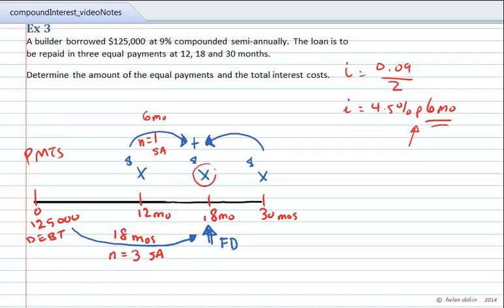The second payment of X dollars is not moved at all because it is already on the focal date, so we don't inflate or deflate it. The third payment of X dollars must be discounted — it is 12 months ahead of the focal date, so that's N equals 2 semiannual periods, and we'll use a negative exponent.